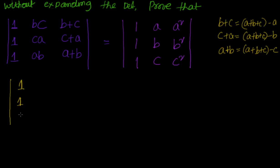Okay, I will write it as 1, 1, 1, 1. The next column will remain as it is because it's untouched. Now, here B+C I am writing it as A+B+C minus A. Similarly, I am writing the second element as A+B+C minus B.